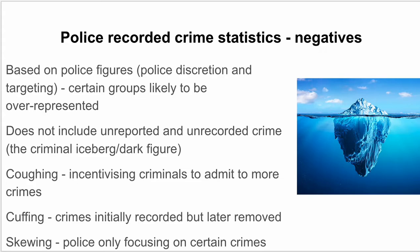However, there are negatives. They're obviously based on police figures, so we have to think about the nature of policing and police discretion. Police targeting certain groups means those groups are likely to be over-represented. Police tend to focus on street crime, so those involved in street crime are over-represented rather than those involved in more hidden crimes like corporate crime. It also doesn't include unreported or unrecorded crime — the criminal iceberg or dark figure of crime — as people might not report crimes because they're afraid, don't think it's serious enough, or don't think the police will take them seriously. Even if reported, it might not be recorded if police feel there's insufficient evidence.